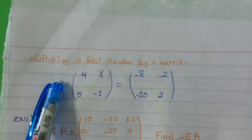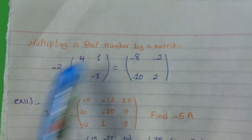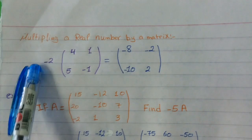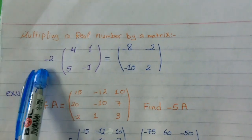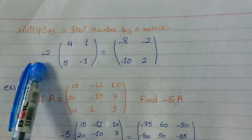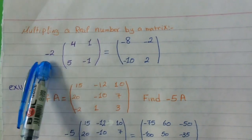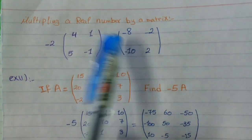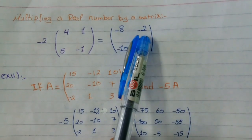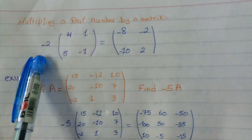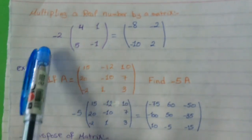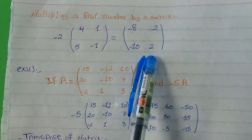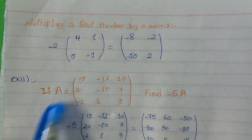Multiplying a real number by a matrix: what you are going to do is distribute each element by the real number. For example, negative 2 times 4 equals negative 8, negative 2 times 1 equals negative 2, negative 2 times 5 equals negative 10, and negative 2 times negative 1 equals 2.